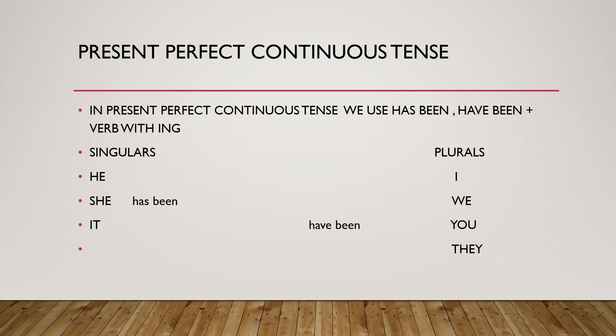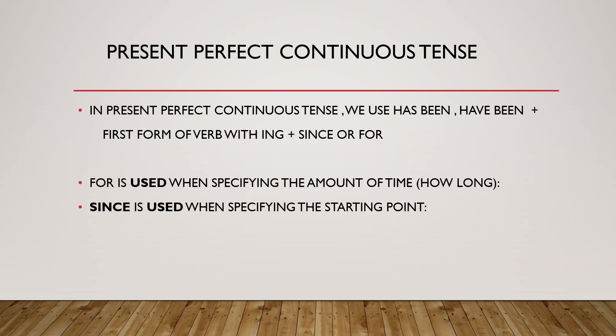And with plurals, for example: I have been, we have been, you have been, they have been. In present perfect continuous tense, we also use have been plus since or for. For is used when specifying the amount of time, how long. Since is used when specifying the starting point.